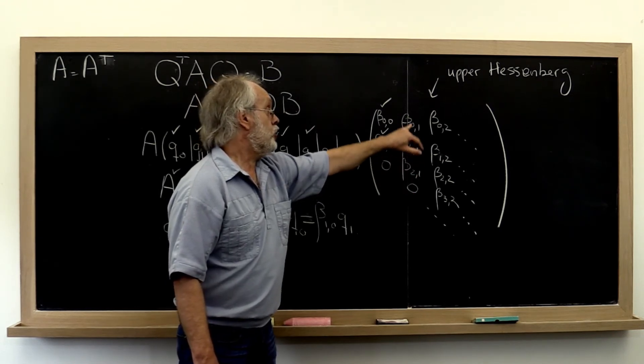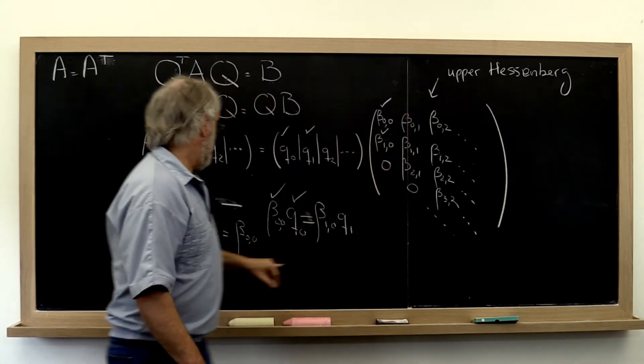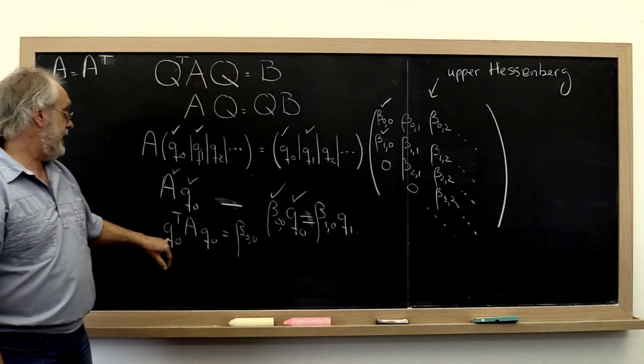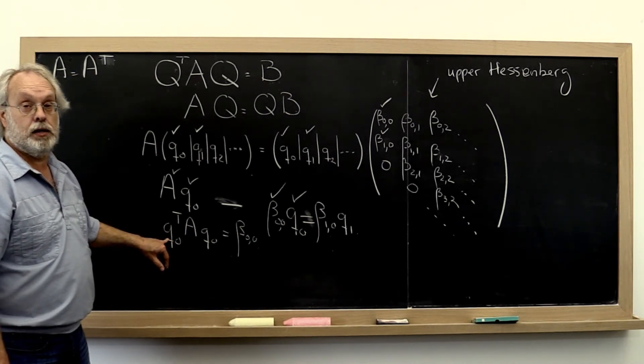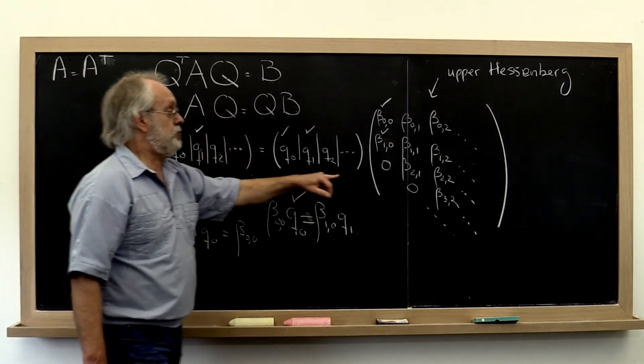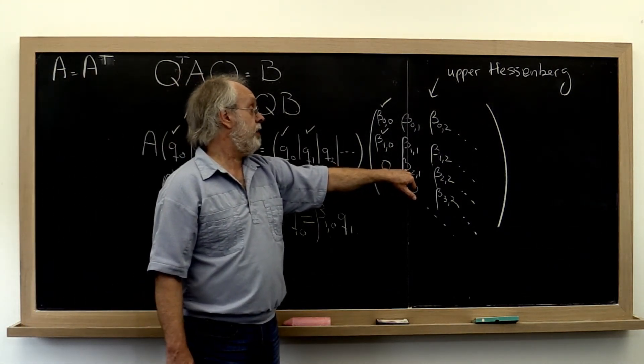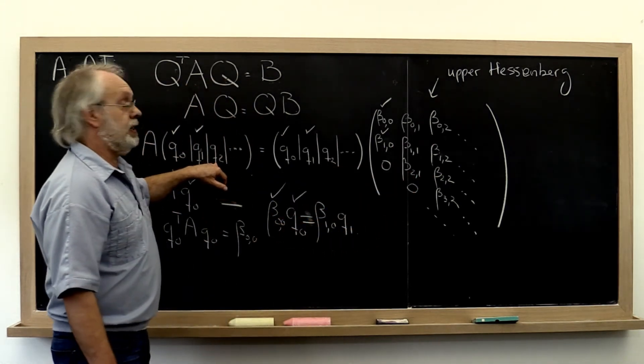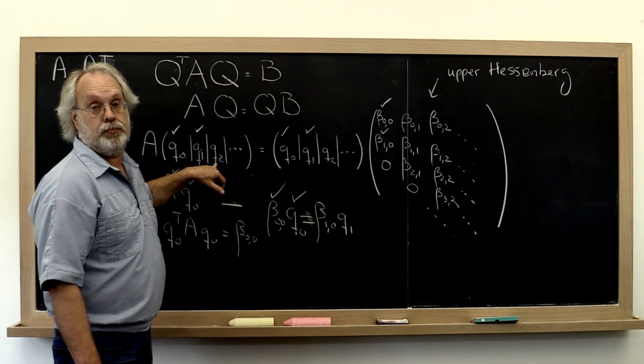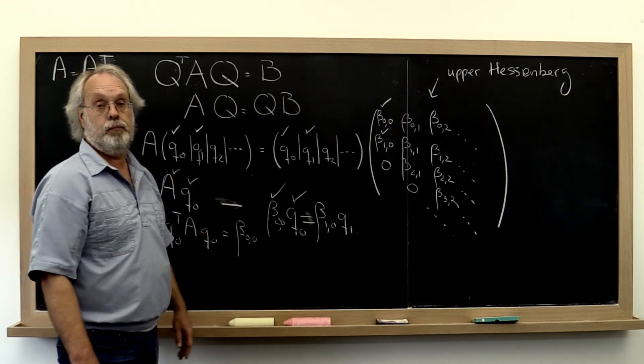We can then determine what these values are by pulling the same trick of hitting it on the left first by Q zero and then by Q one. And then if we choose beta two one to be positive, then it's uniquely determined as is Q two. And we keep going.